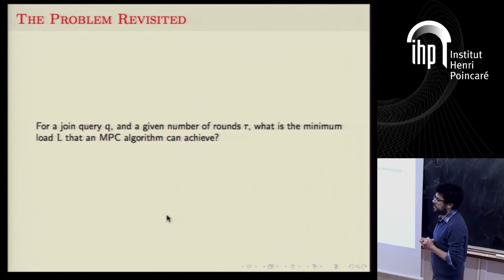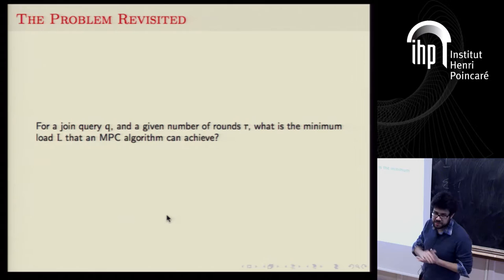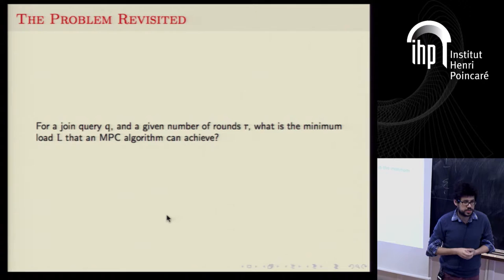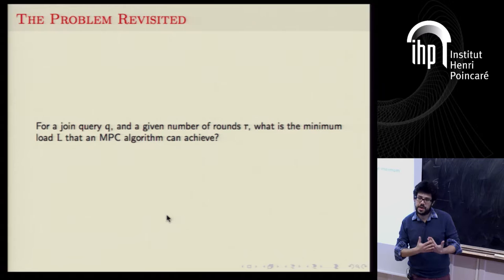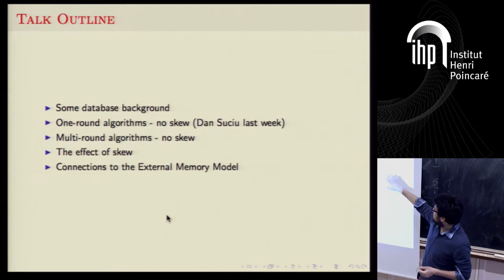Based on this model, let me rephrase the question. We have a join query and a given number of rounds. What is the minimum load L that you can achieve by an algorithm? We want both to propose algorithms and to give lower bounds — we want matching upper and lower bounds.